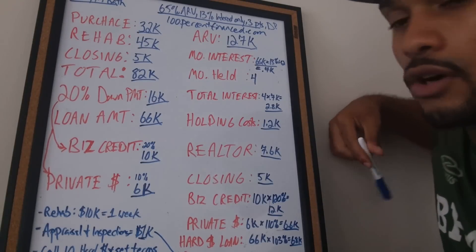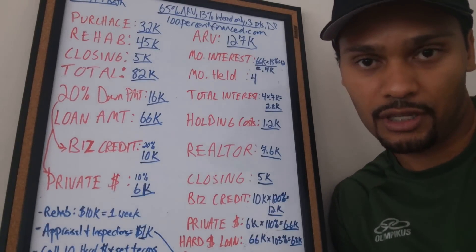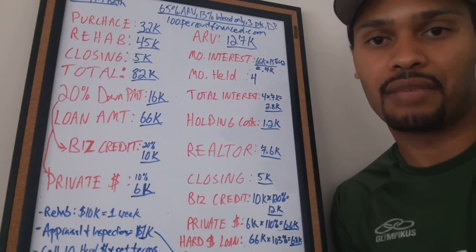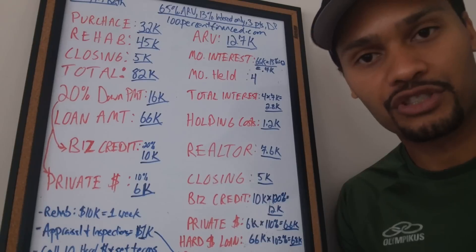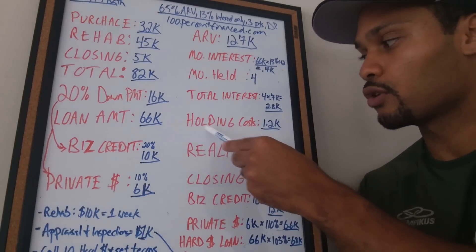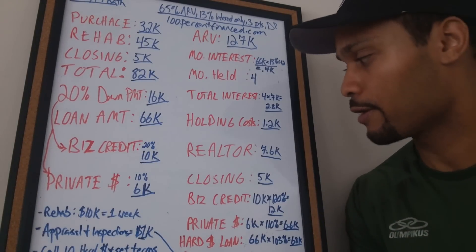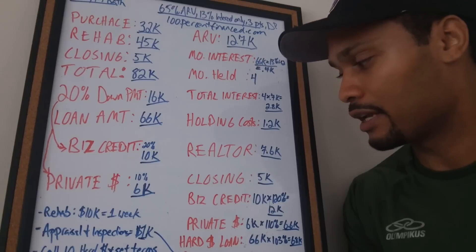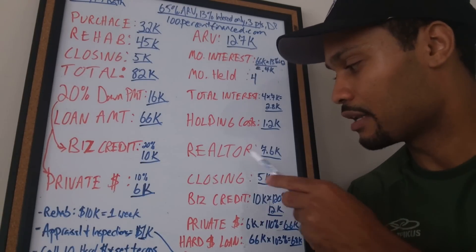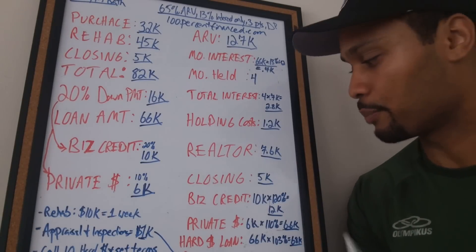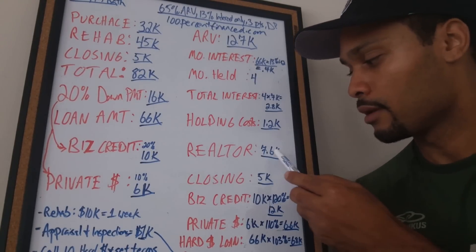Holding costs — water, electricity, gas, staging, insurance, taxes — for the four-month period: roughly $1,200. Realtor commission to list and sell: 6% split between listing agent and buyer's agent = $7,600. Closing costs on the sale side: another $5,000.